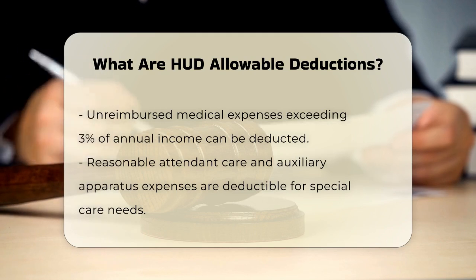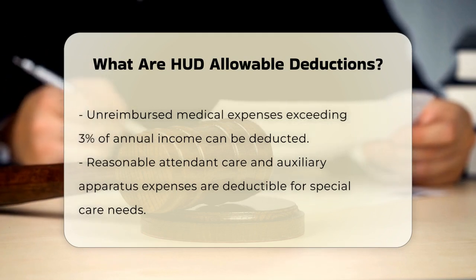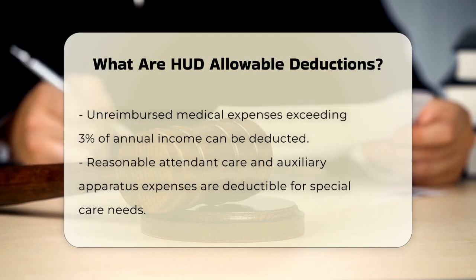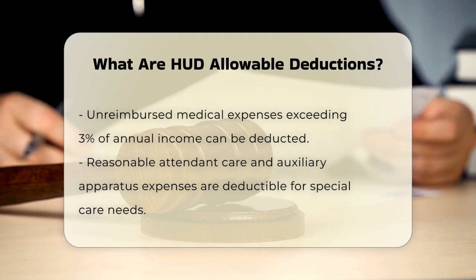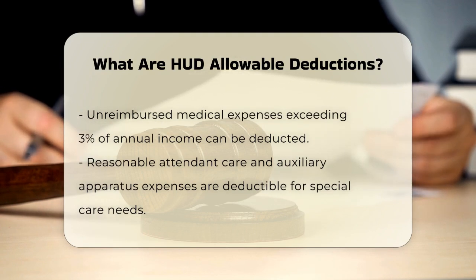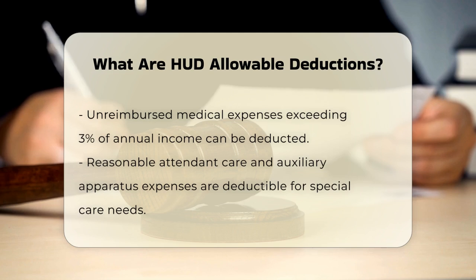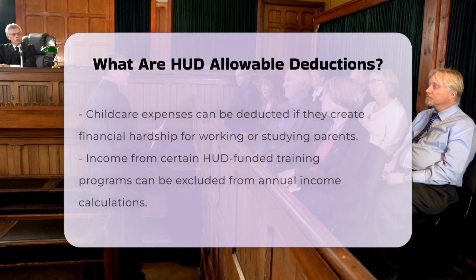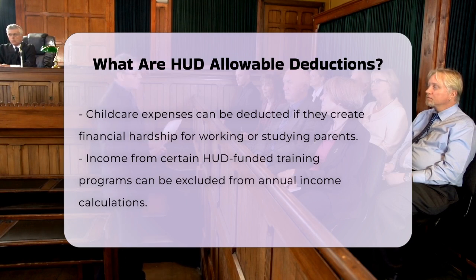Reasonable attendant care and auxiliary apparatus expenses can also be deducted. These are expenses related to caring for a family member who needs special care or equipment, and they can be subtracted from the annual income. Child care expenses can also be deducted if they cause financial hardship, helping families who need to pay for child care so they can work or attend school.